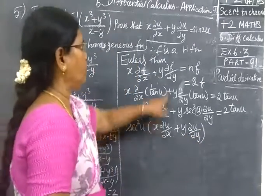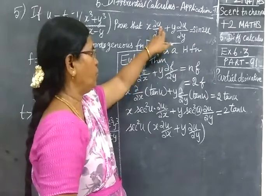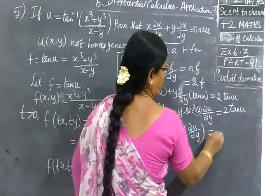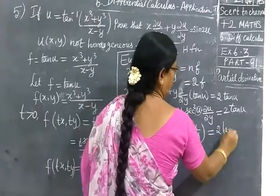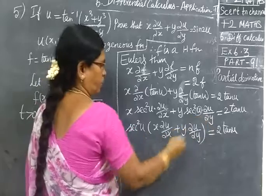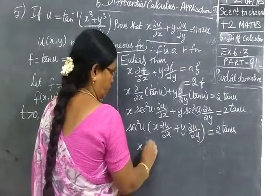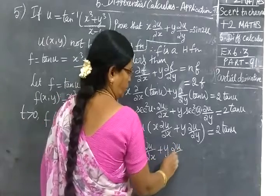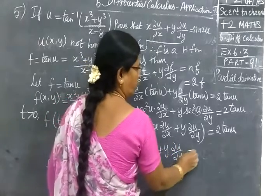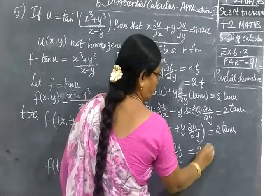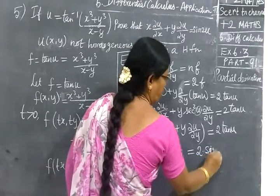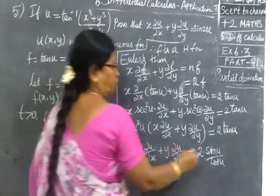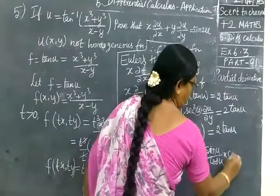If the answer is related, you see the question. Partial u by partial x plus partial u by partial y equal to 2 tan u. So we can write x into partial u by partial x plus y into partial u by partial y equal to 2 tan u, you can write sin u by cos u. We can write, when the numerator will come to cos square u.